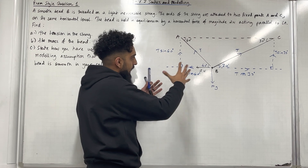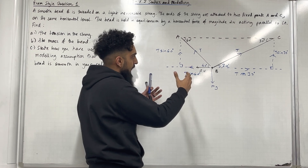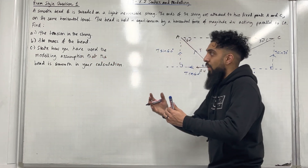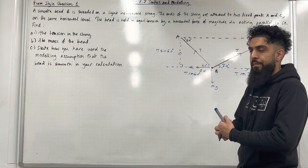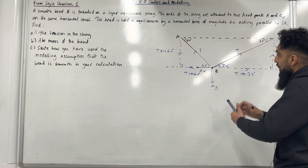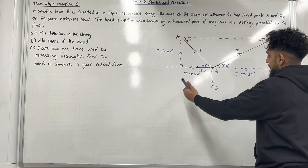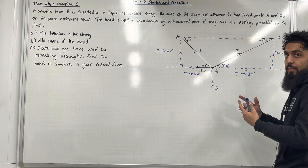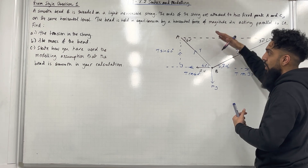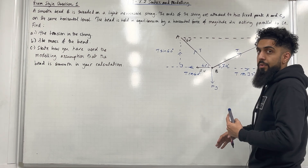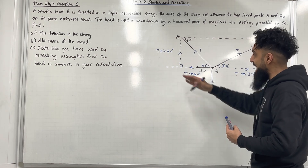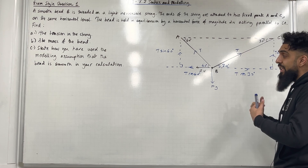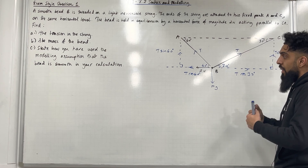So that is the complete force diagram. In part A, we want to find the tension in the string. If we resolve horizontally, we'll have only one unknown and that will be T. If we resolve vertically, we'll have two unknowns — T and M. So to find the tension in the string, we need to resolve horizontally.